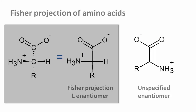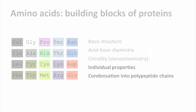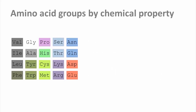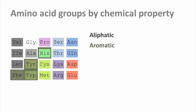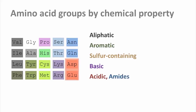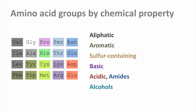Now that we understand the properties of amino acids in general, let's look at their individual chemistry. There are a number of different ways to split the 20 amino acids into meaningful subgroups. Typically, we distinguish aliphatic, aromatic, sulfur-containing, basic and acidic amino acids, and the amides of those acids. Finally, there are alcohol amino acids with hydroxyl groups, and one that doesn't fit into any category: proline.